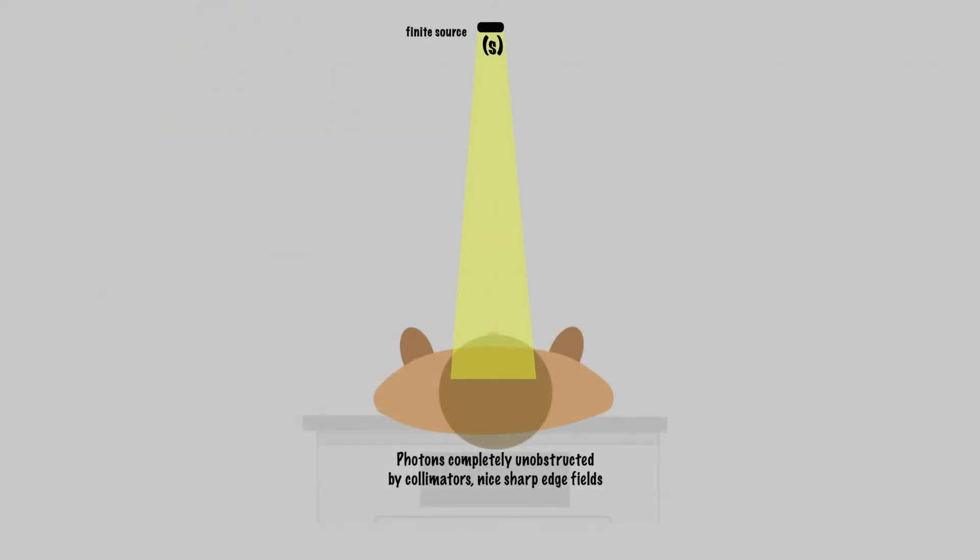Now let's look at a real source. A real source is going to have some finite size S, which is going to have an effect on the beam. The center of the source is unobstructed by collimators. Photons originating from here will proceed down from the source to a point in the patient.